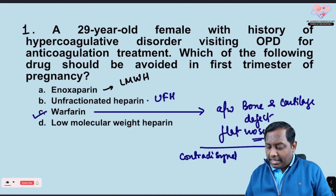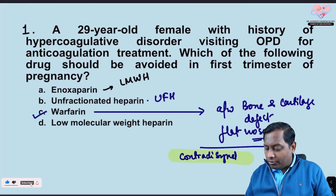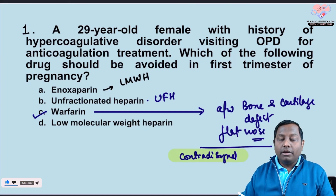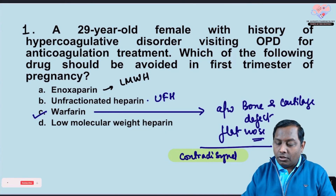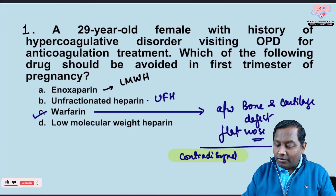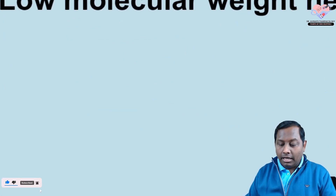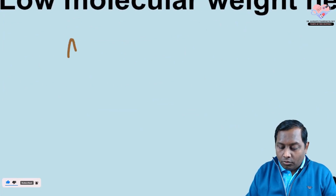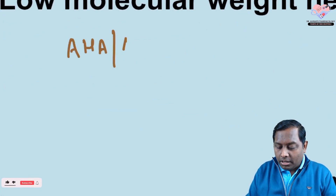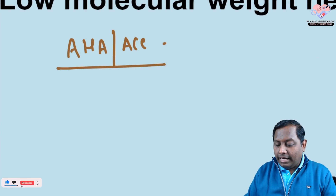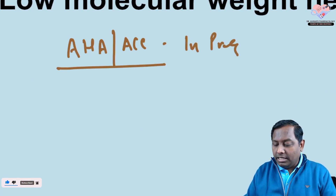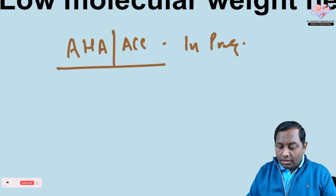Conradi syndrome is mainly associated with warfarin — it should be avoided in the first trimester. Now let me quickly explain: according to the American Heart Association and American College of Cardiology guidelines, for anticoagulation during pregnancy in the first trimester, weeks 1 to 12, you are going to utilize unfractionated heparin or low molecular weight heparin.